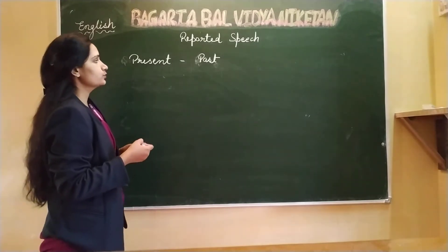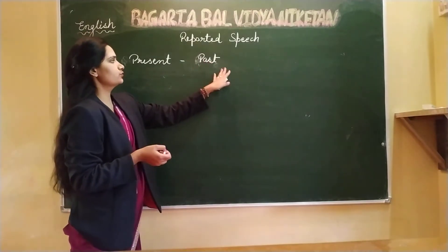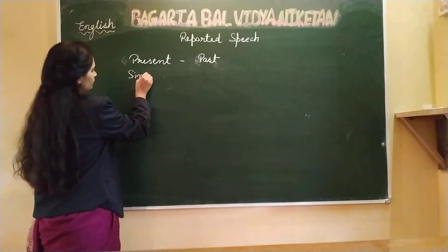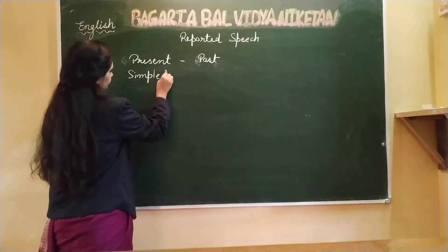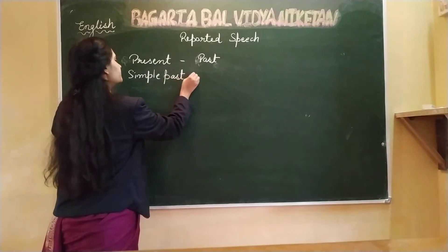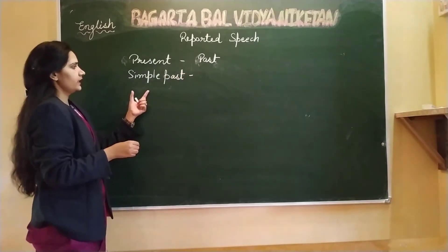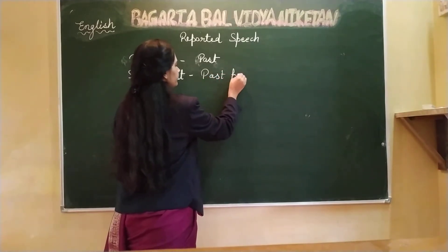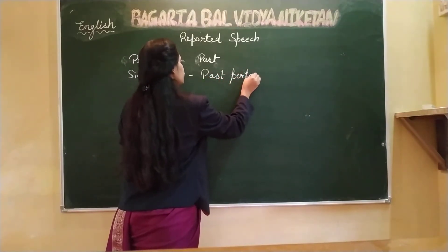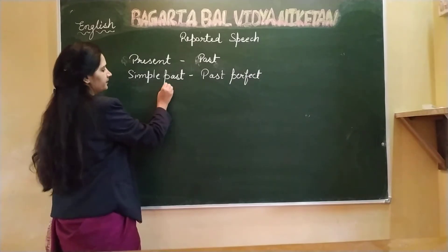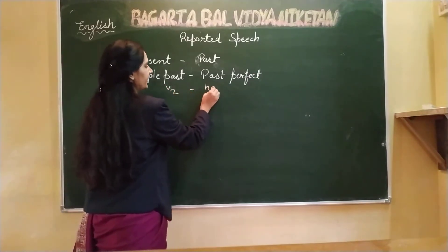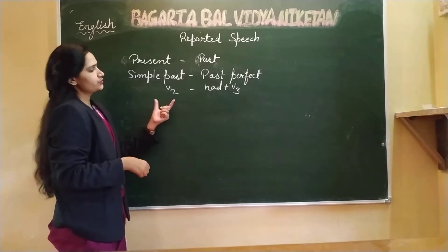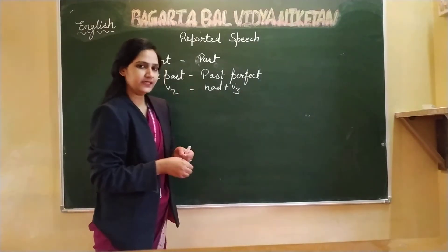Today we will read how to change a past sentence to indirect speech. If a simple past sentence is given in direct speech, we change it to past perfect. That means the verb's second form changes to 'had' plus the verb's third form, and 'did not' changes to 'had not' plus the verb's third form.